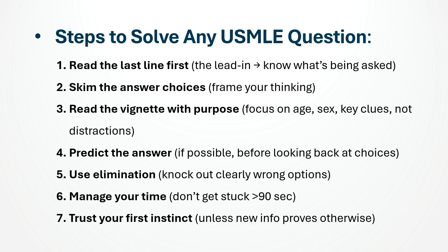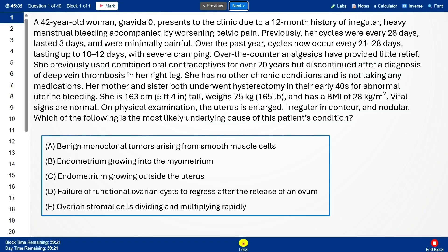Let's apply the checklist to a real Step-style vignette: a 42-year-old nulligravid woman presents to the clinic due to a 12-month history of irregular, heavy menstrual bleeding accompanied by worsening pelvic pain. Previously her cycles were every 28 days, lasted three days, and were minimally painful. Over the past year, cycles now occur every 21 to 28 days lasting up to 10 to 12 days with severe cramps, and over-the-counter analgesics have provided no relief. This vignette is long — that's exactly why we use our strategy. Step 1: read the last line first. The question asks what is the most likely cause of her symptoms, so I know they want the diagnosis. Step 2: skim the answer choices — I see both uterine and ovarian causes, which frames my thinking.